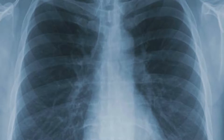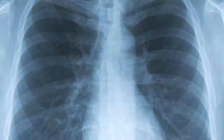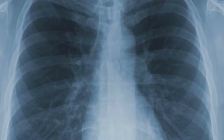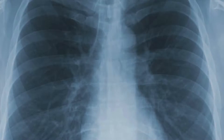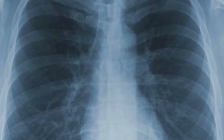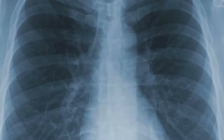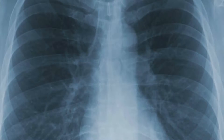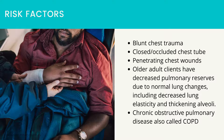When at least two nearby ribs, generally on one side of the chest, sustain numerous fractures, the chest wall becomes unstable, resulting in paradoxical chest wall movement. As a result, chest wall expansion is severely limited.